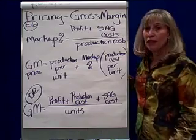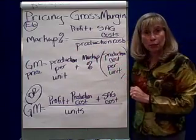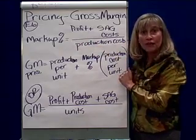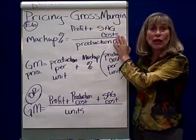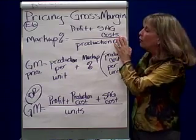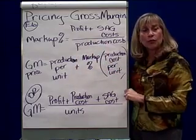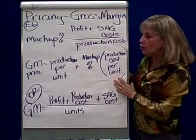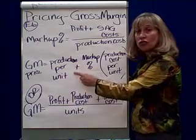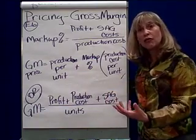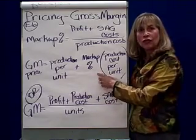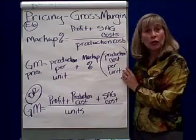Under the gross margin method, we first find the markup percentage. The markup percentage is the desired profit plus the selling, administrative, and general costs that I have to cover to inspect the cow, divided by the production cost. That gives you the percentage. So when you figure the gross margin price, you take the production cost per unit — the traceable costs of looking at the cow — plus the markup percentage times the production cost per unit.